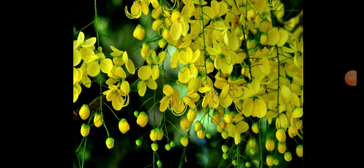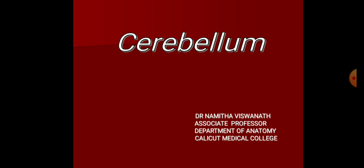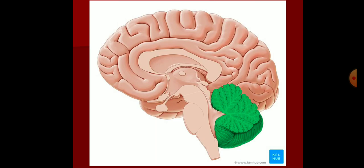Good morning. Today we are going to deal with the cerebellum, a very important part of the hindbrain. The green colored structure you see in the figure is the cerebellum. Hindbrain consists of pons, medulla, and cerebellum together. The brainstem, by contrast, means midbrain, pons, and medulla. The cerebellum is the second largest part of the brain, the first largest being the cerebrum.